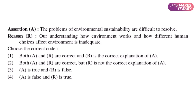This is a question from a UGC NET previous paper. The assertion says the problems of environmental sustainability are difficult to resolve — that is true. The reason says our understanding of how the environment works and how different human choices affect the environment is inadequate — that is also true. So the answer comes in the first two options. Reading it as 'assertion is true because reason is true': the problems of environmental sustainability are difficult to resolve because our understanding is inadequate. This makes sense, so option one is correct.